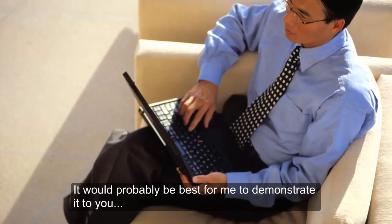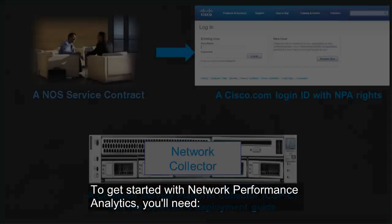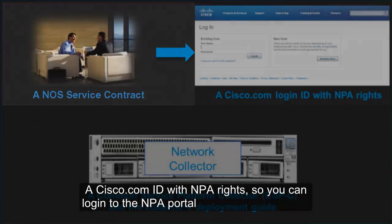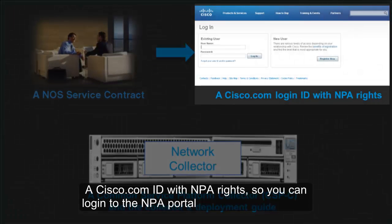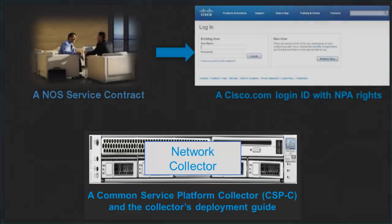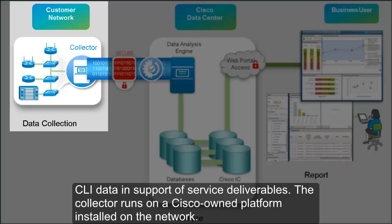It would probably be best for me to demonstrate it to you. To get started with Network Performance Analytics, you'll need a NOS service contract, a Cisco.com ID with NPA rights so you can log into the NPA portal, and a Cisco common service platform collector and the collector's deployment guide. The first step is to deploy a network collector. The collector is a key on-site device that collects inventory, configurations, syslog, and CLI data in support of service deliverables.